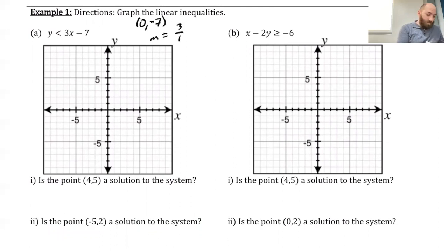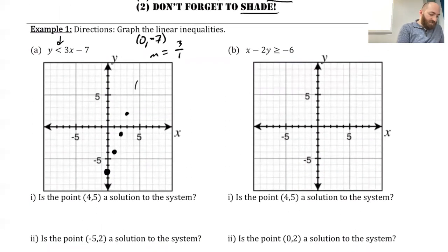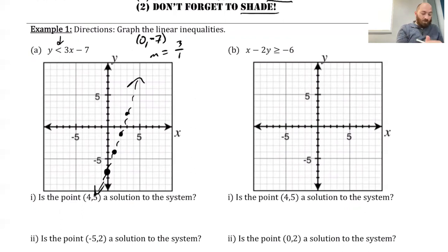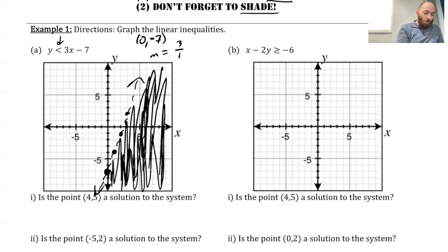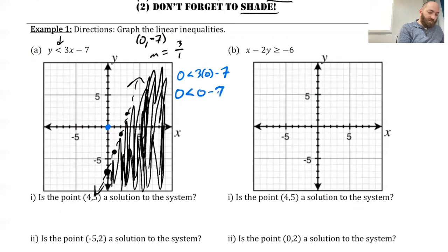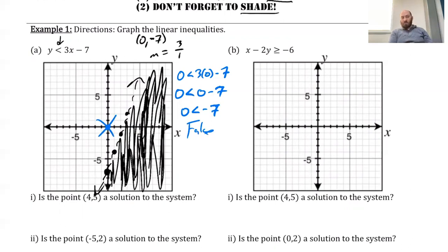I've got (0, negative 7) and I go up 3 to the right 1, and one more. Since this is a less than symbol, this is going to get a dashed line. If you feel confident about your shading ability, you might see that it should be down here — less than will be going below the line. If you're not as confident, pick a test value, like (0, 0). Plugging that in: 0 less than 3 times 0 minus 7, so 0 less than 0 minus 7, so 0 less than negative 7. That is a false statement, so that means this was not a part of it and I should shade the other side.